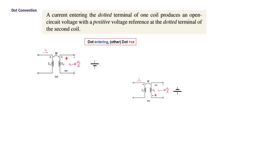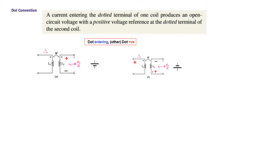Now let's see another case. Here the dot on the secondary side is at the bottom. The rule remains the same — dot entering means current entering at the dot, dot positive. So this dot at the bottom will now become positive, and the top will be negative — just like a battery with negative at the top and positive at the bottom. So we will write it with a negative sign: the induced voltage V will be minus M·dI/dt.